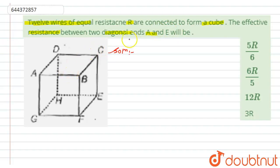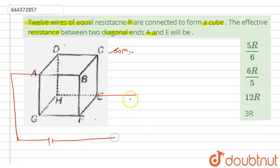We have to find the effective resistance between the two diagonal ends A and E. Let us assume these two terminal ends — the two diagonal ends of this cube — are connected to a battery supply of voltage V. After connecting the battery across these two terminals, the current flowing through this branch will be i.